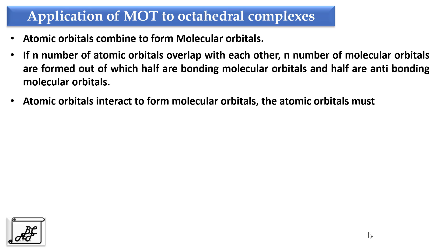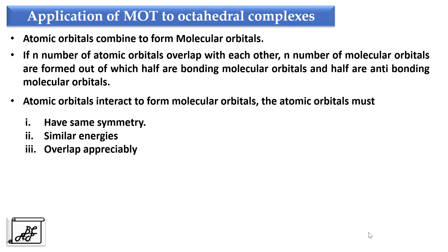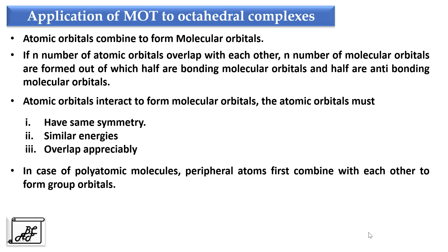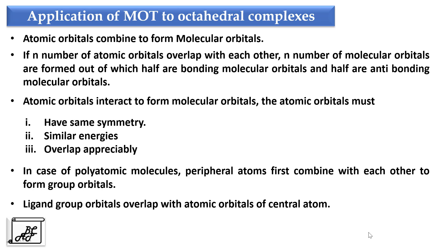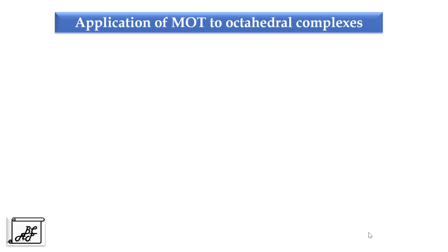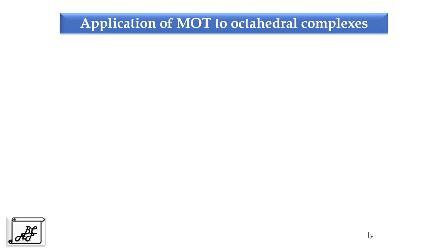The third postulate is that atomic orbitals interact to form molecular orbitals, and the atomic orbitals must have the same symmetry, similar energies, and they should overlap appreciably with each other. In case of polyatomic molecules, where the atomic orbitals are more than two, the peripheral atoms first combine with each other to form group orbitals, and finally these group orbitals overlap with atomic orbitals of the central atom.